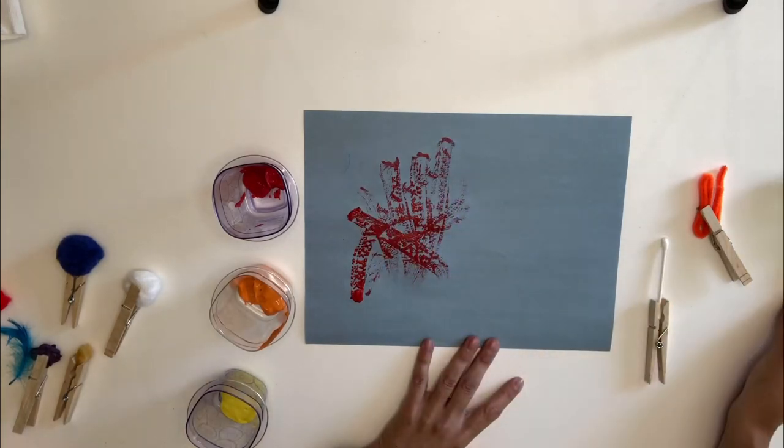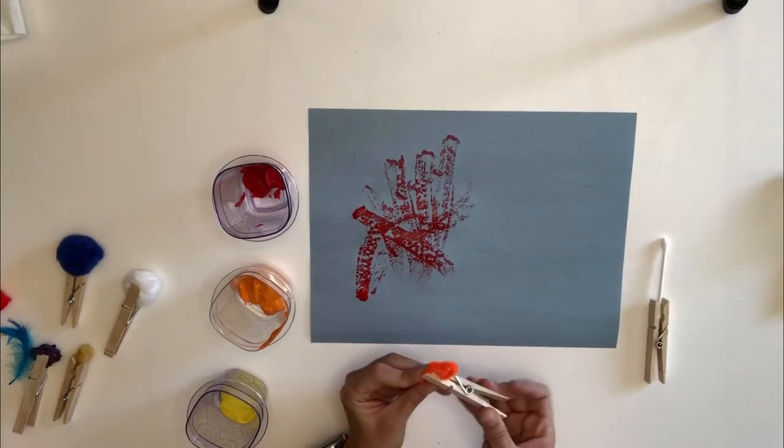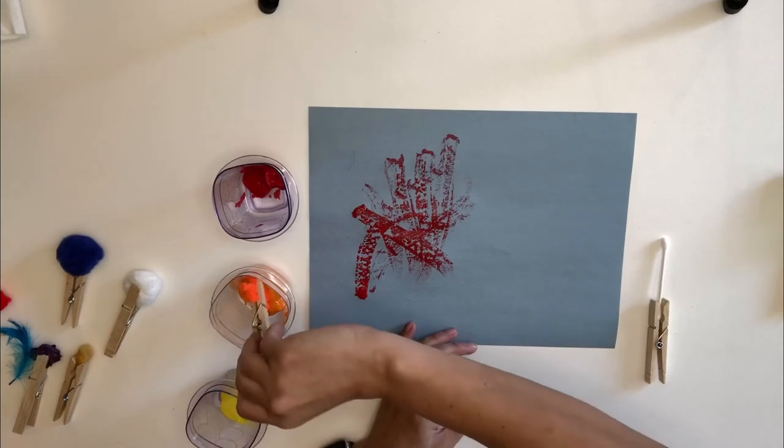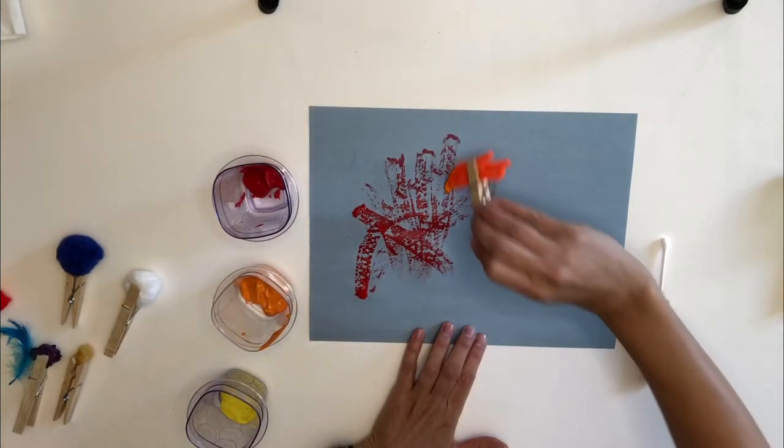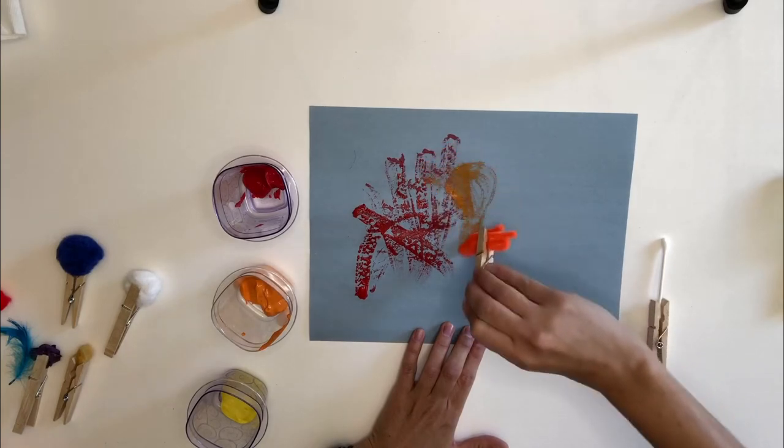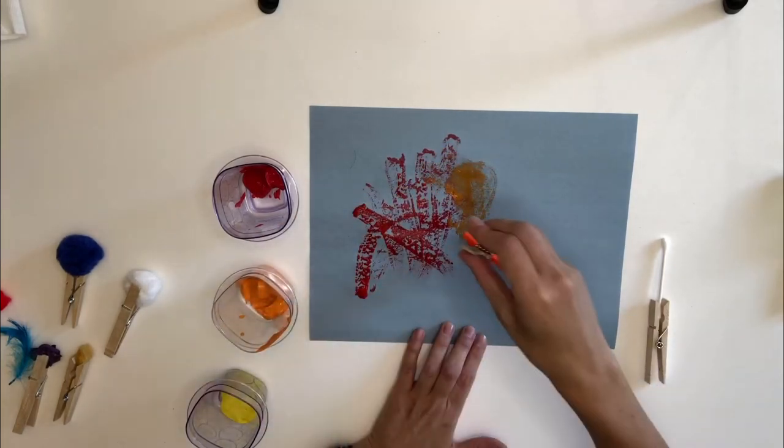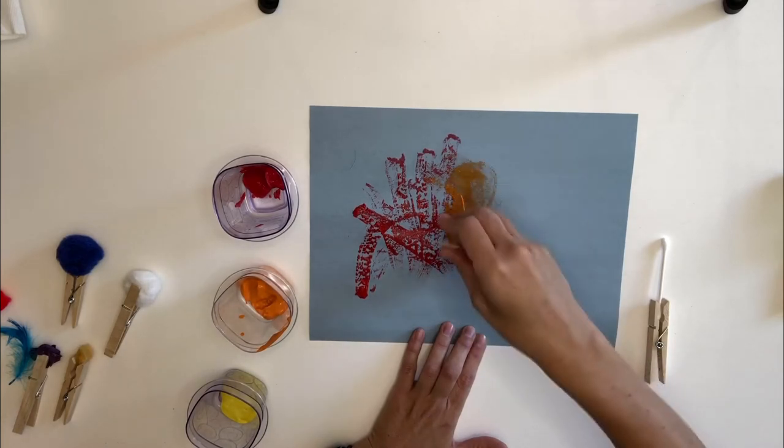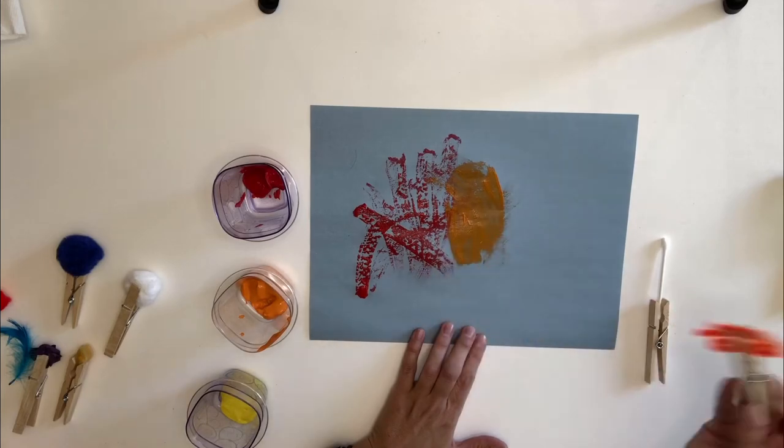Let's see what else I can draw with. Here's my pipe cleaner. I'm gonna put it into the orange paint, because I have an orange pipe cleaner. I'm gonna see what this one does. Oh, wow! That one makes a much smoother texture than the feather. I'm almost starting to make a rainbow.